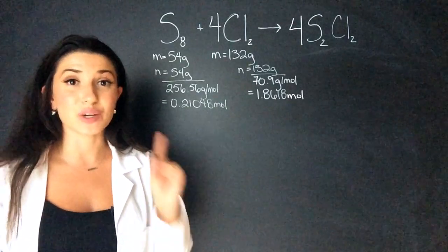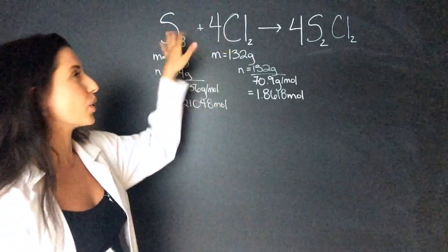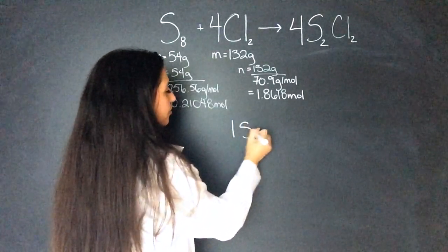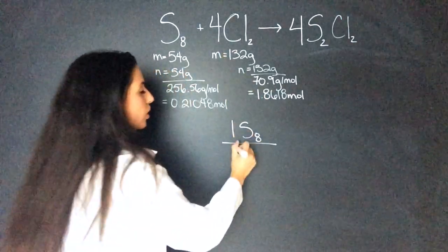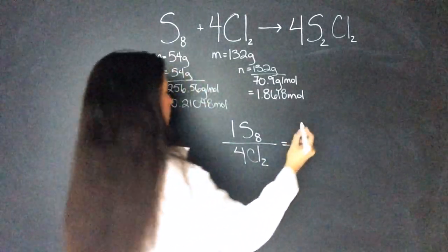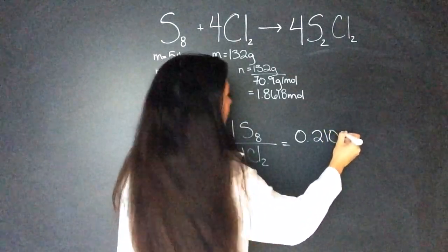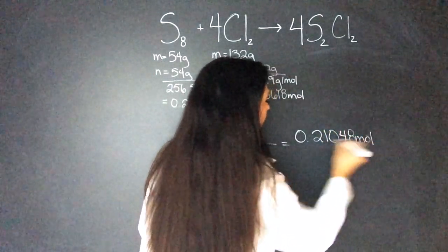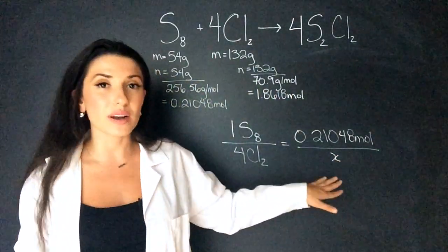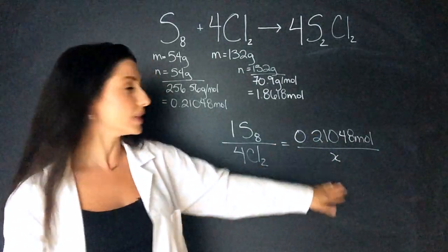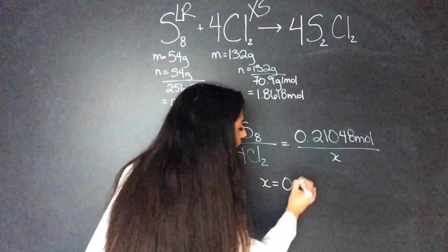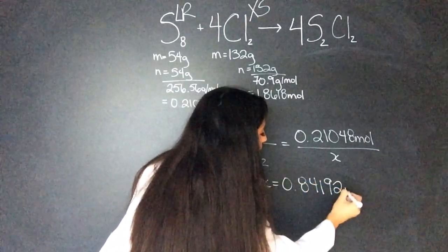So I'm going to use the method one I taught you last time because I only have two reactants. So I know that one mole of sulfur will react with four moles of chlorine. Then I'll only use one of the moles. So I'll use sulfur 0.21048 mole and then X for the chlorine. Now the reason I'm doing this is because I want to see how much chlorine I need to react with this much sulfur. So when I cross multiply and divide this, I get that X equals 0.84192 mole.